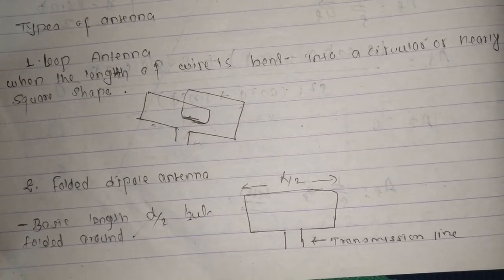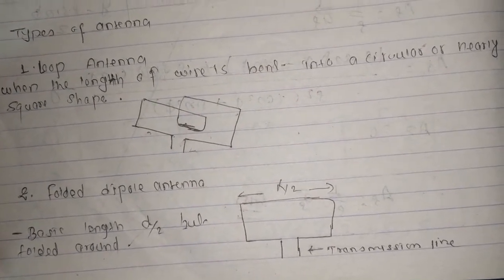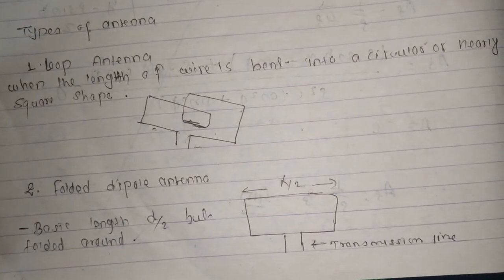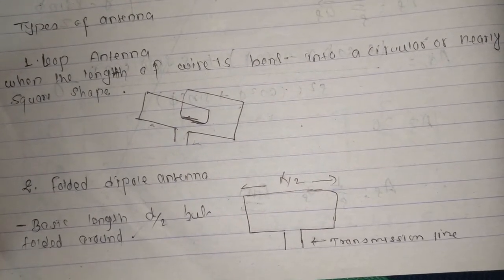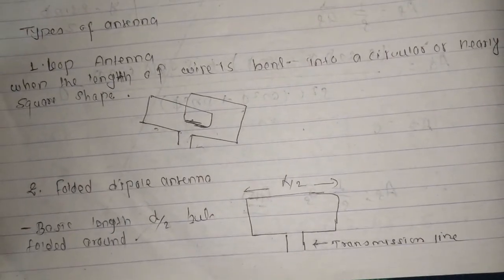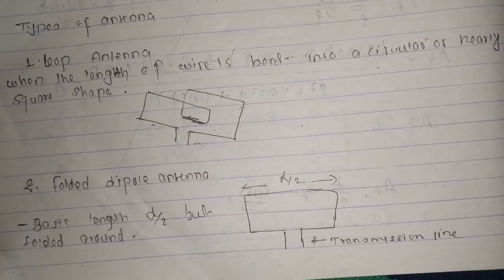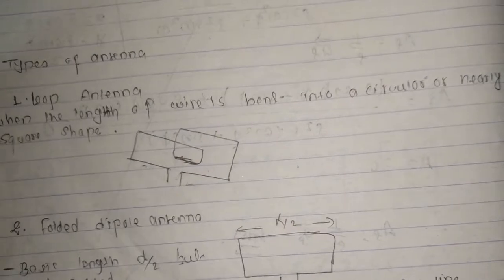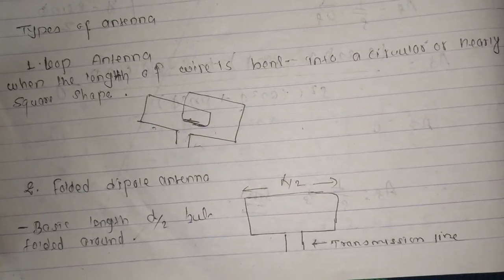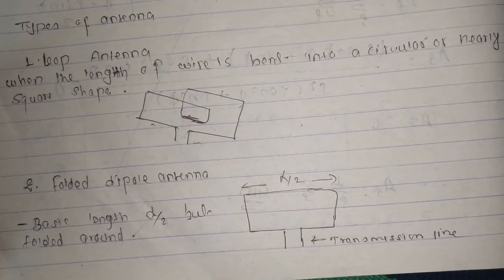The wire is folded, so basic length is lambda by two, but folded around. This is called folded antenna. It's just informative, so we don't need to worry about it. We just have to remember the things and know about them.